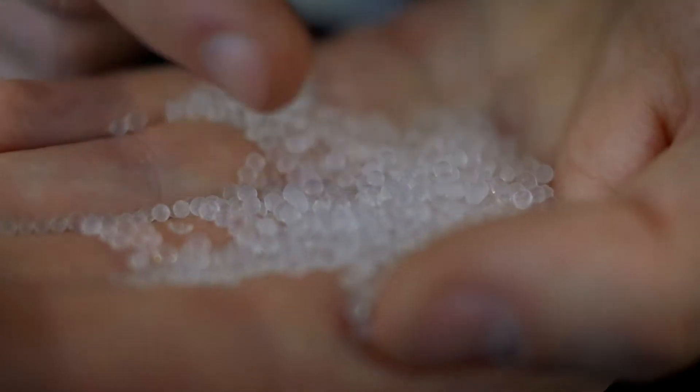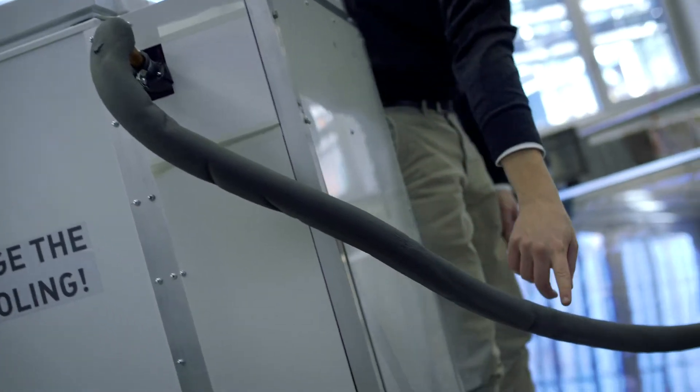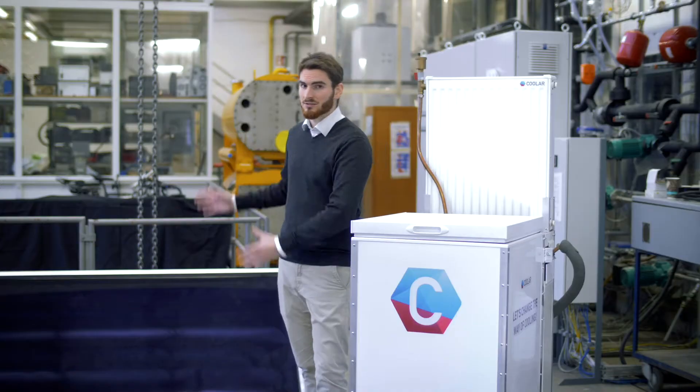Once the silica gel surface is full of vapor, like a wet sponge, it needs to be dried to start this process over again. And that's where this collector comes into play.